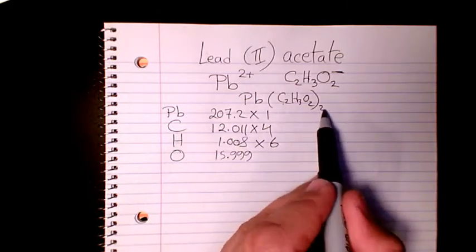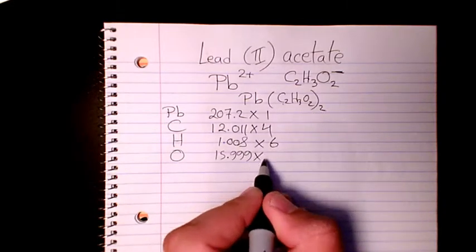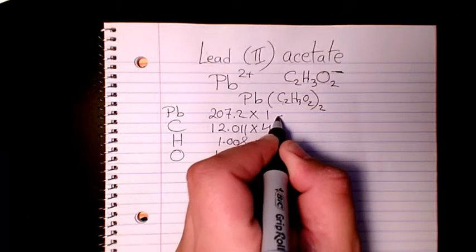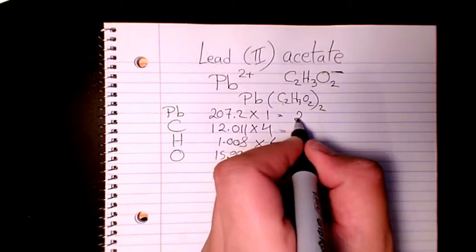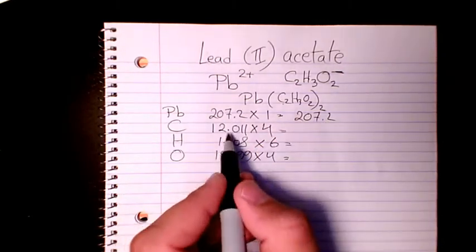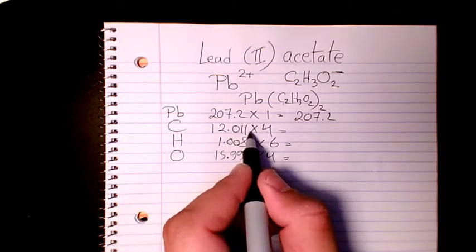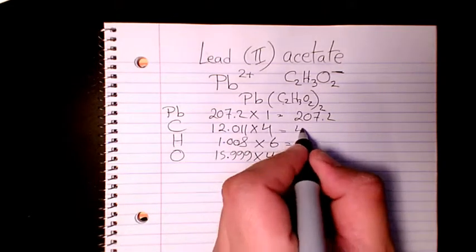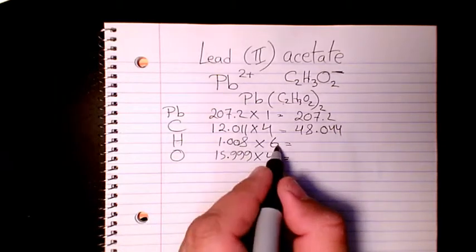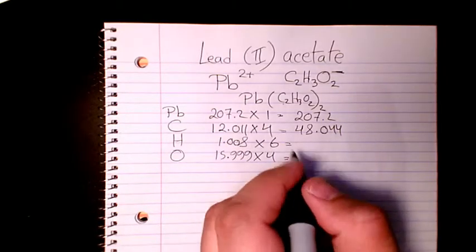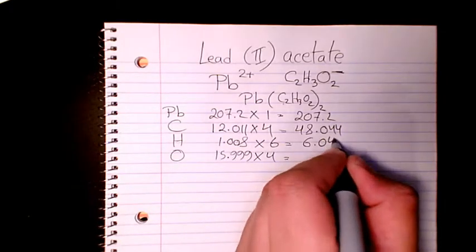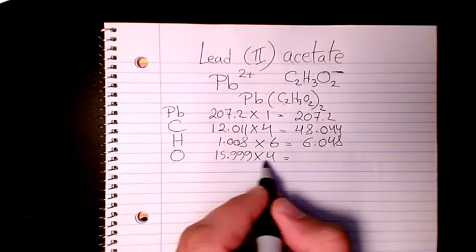So one times 207.2 equals 207.2. Carbon is 12.011 times 4, which is 48.044. And here we have 6 times 1.008, which is 6.048.